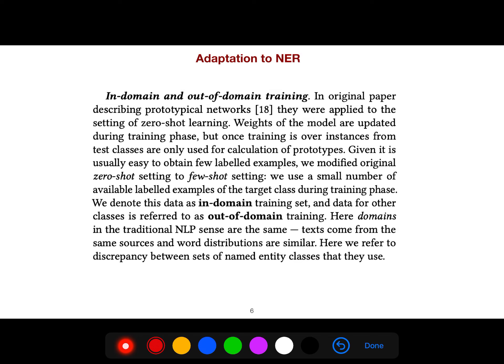In-domain and out-of-domain training: In the original prototypical networks paper they apply to zero-shot learning where weights of the model are updated during training phase, but once training is over, instances from test classes are only used for classification of prototypes. Given it's usually easy to obtain few labeled examples, they modify the original zero-shot setting to few-shot setting and use a small number of available labeled examples of the target class during training phase.